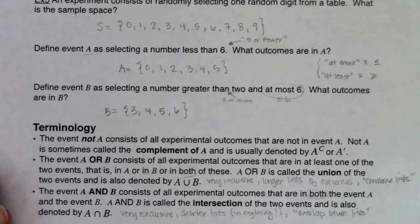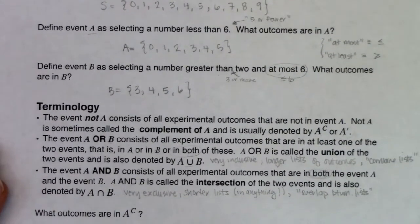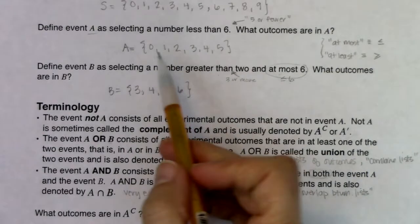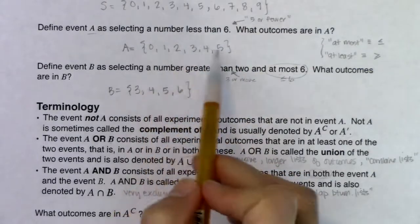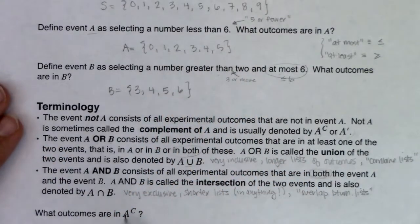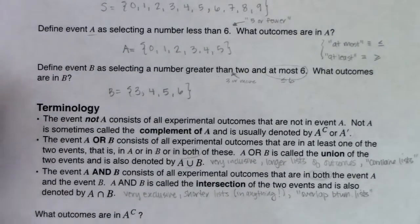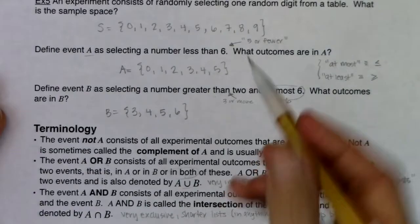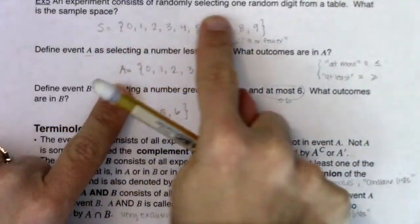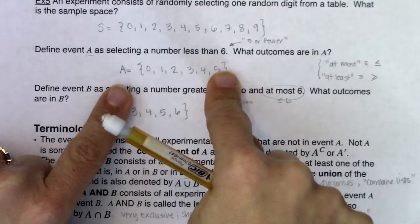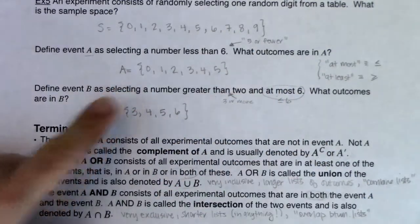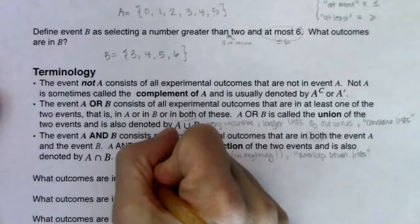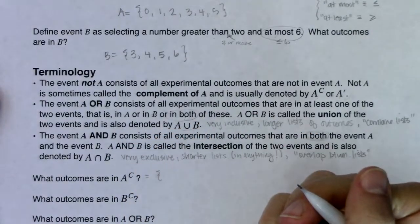What are the outcomes in A complement? The sample space is 0 through 9 and A has 0, 1, 2, 3, 4, 5. To find A complement, look at all numbers in the sample space that are not in A. Since zero through five are in A, six, seven, eight, and nine are in A complement.